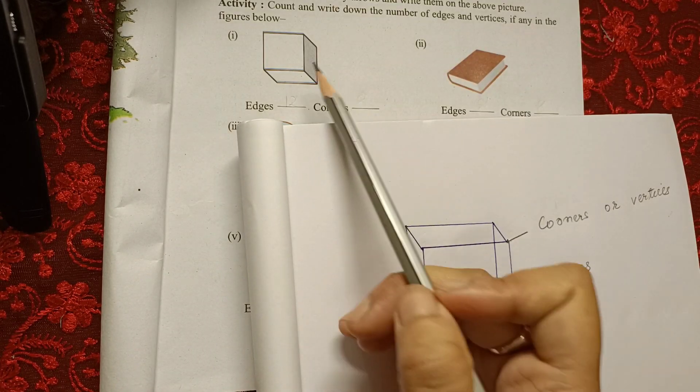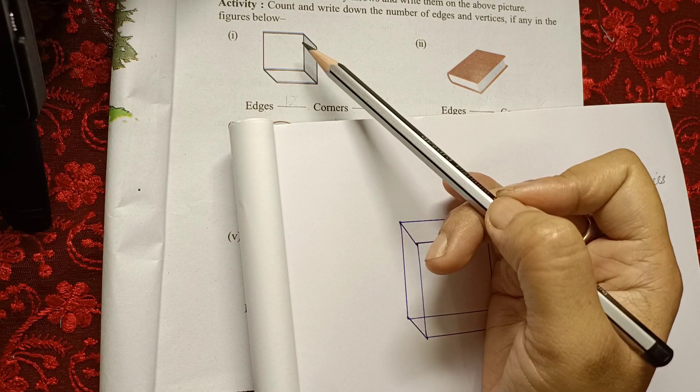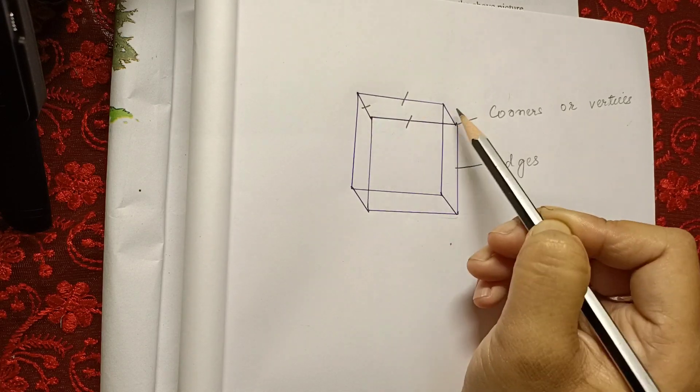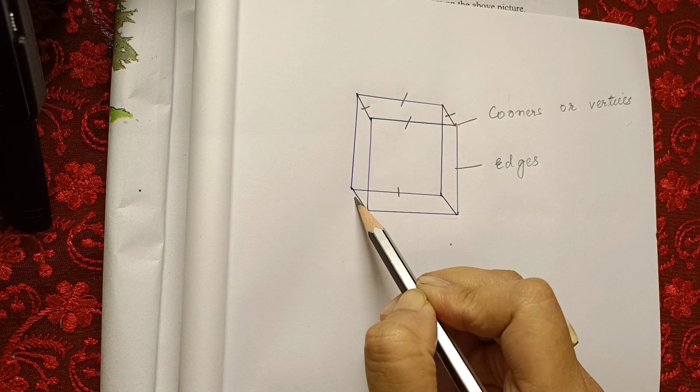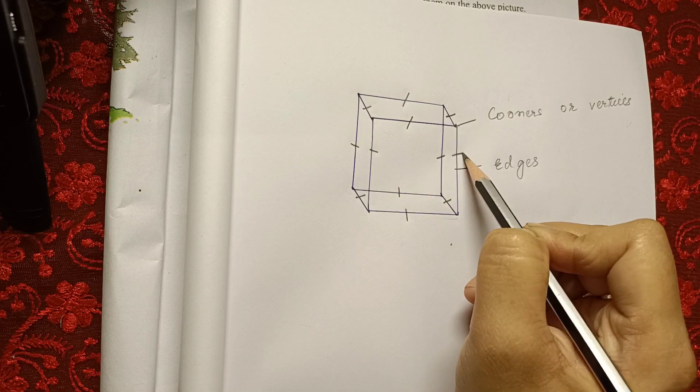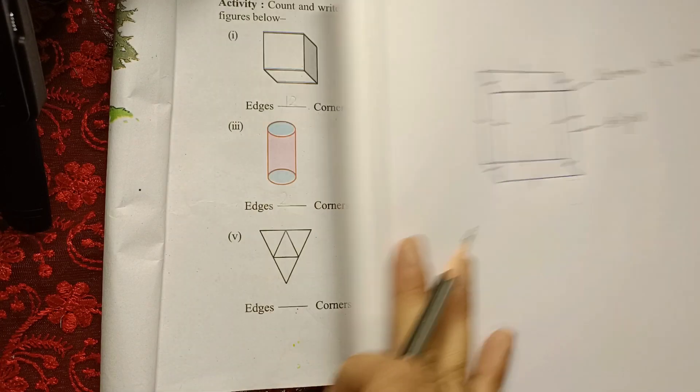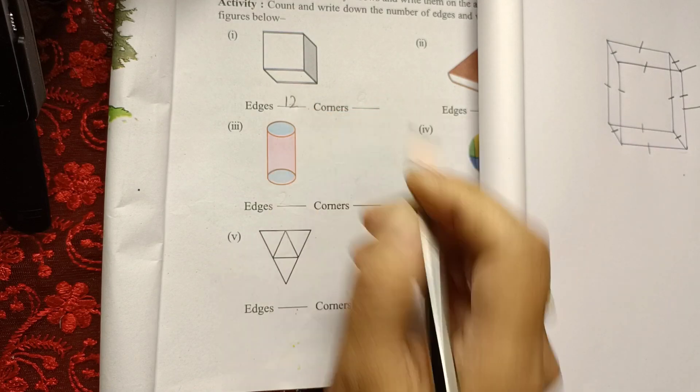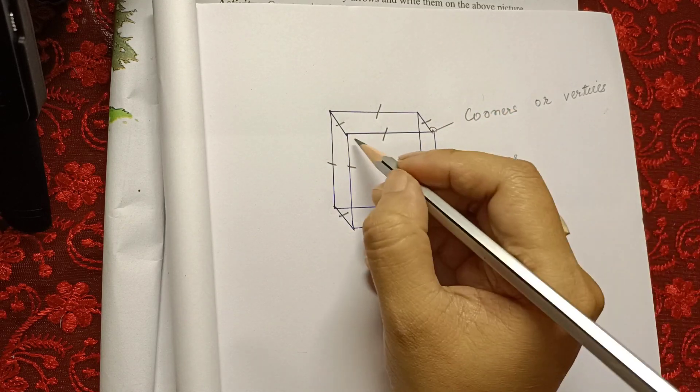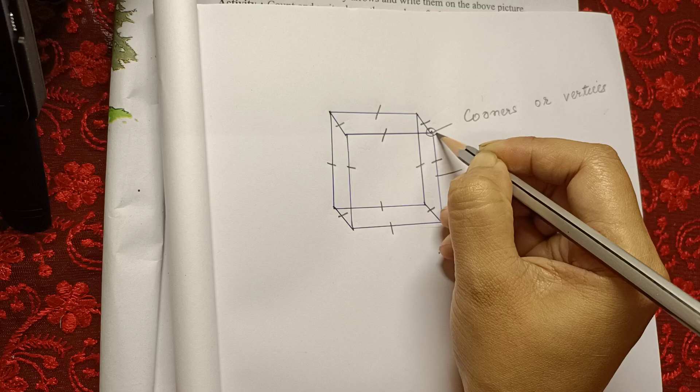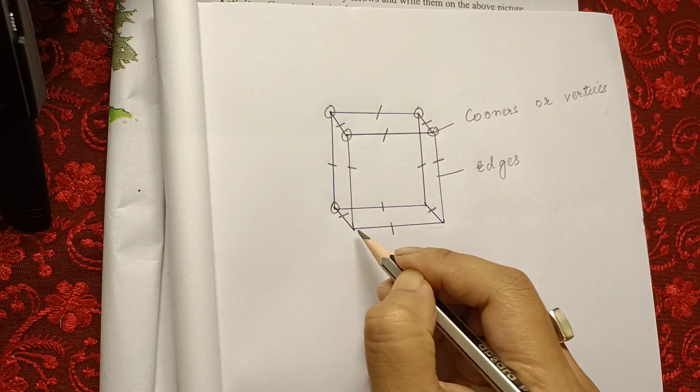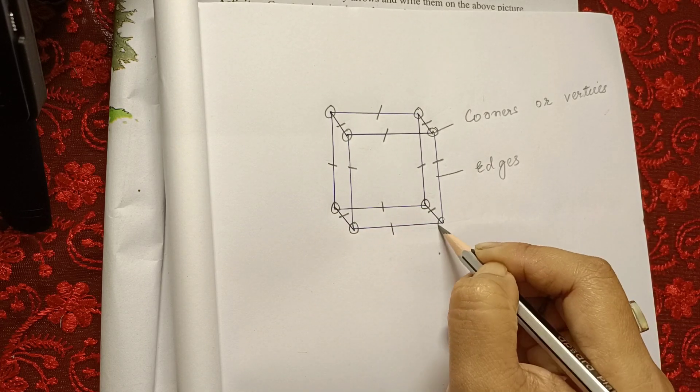Now how many corners are there? This is like a cube so I will count here because we cannot count the other side. 1, 2, 3, 4, 5, 6, 7, 8 from the lower part, 9, 10, 11, 12. So we have 12 edges. And how many corners are there? The endpoints are called the corners: 1, 2, 3, 4, 5, 6, 7, 8. So 8 corners.